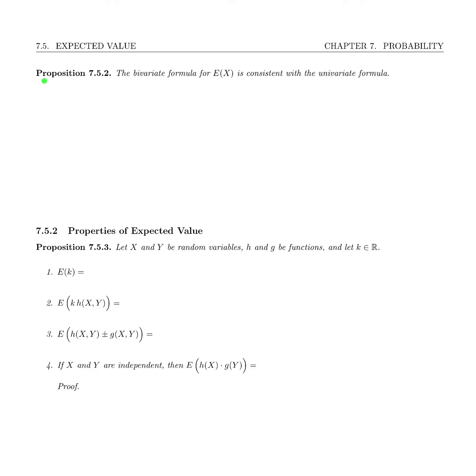Welcome back. In this video we're going to look at proposition 7.5.2 and it tells us that the bivariate formula for the expected value of a single random variable x is consistent with the univariate formula.